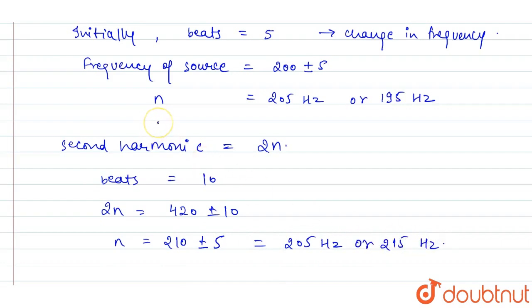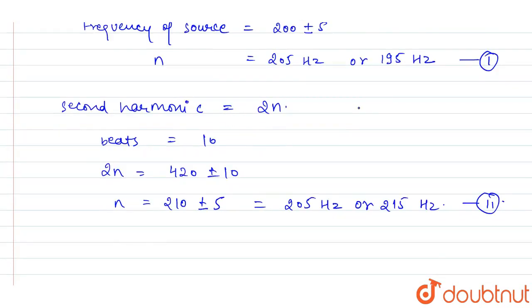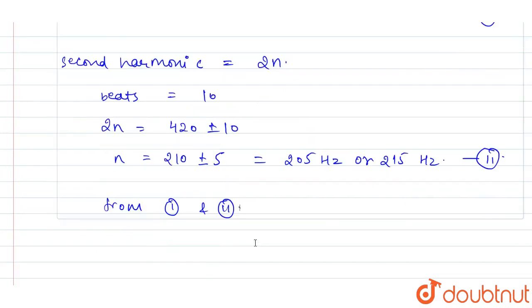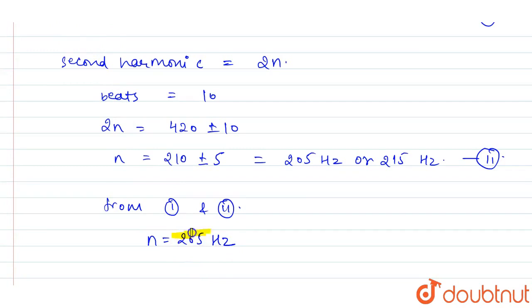Now we have two statements. From the first statement, the source frequency could be 195 Hz or 205 Hz. From the second statement, the frequency of the source can be 205 Hz or 215 Hz. The common frequency from both conditions is 205 Hz. So this is the final answer — the frequency of the source is 205 Hz.